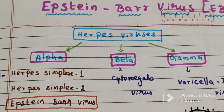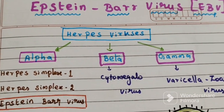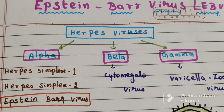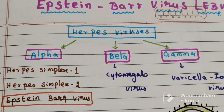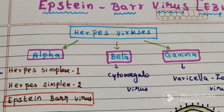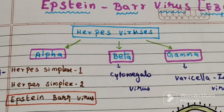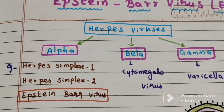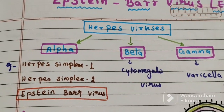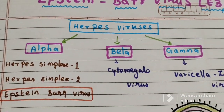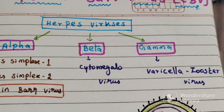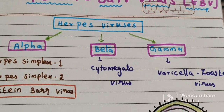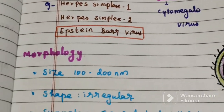The Herpesviridae family has been divided into three subfamilies: alpha, beta, and gamma. The alpha subfamily includes Herpes simplex virus 1 and Herpes simplex virus 2, as well as Epstein-Barr virus. Beta includes cytomegalovirus, and gamma includes varicella-zoster virus. In this video, we will discuss about Epstein-Barr virus.